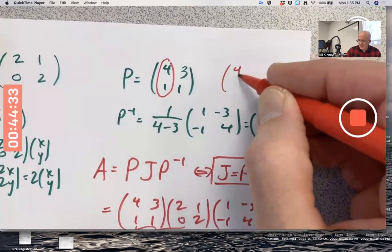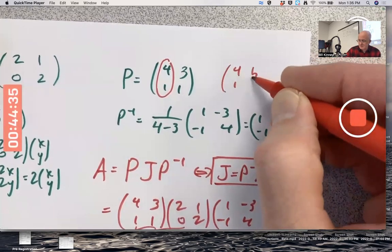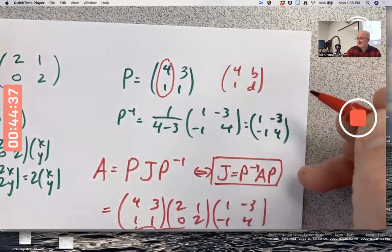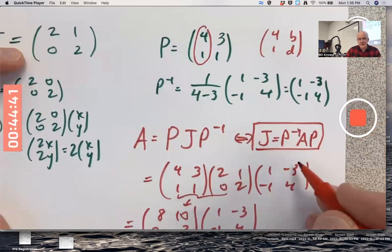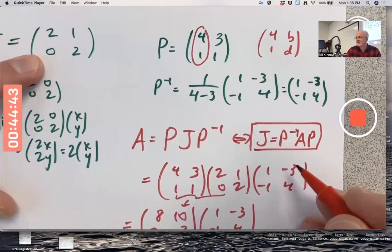I just say, well, I don't know what the second column should be. Let me call the numbers B and D and see if I can just figure out B and D by actually multiplying this out and setting it equal to this and solving for B and D. That's what I do.